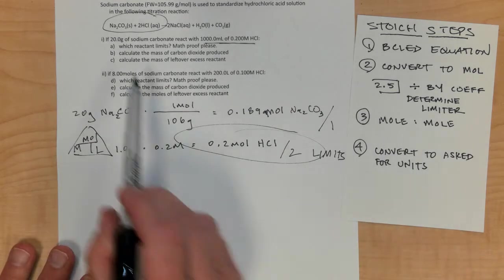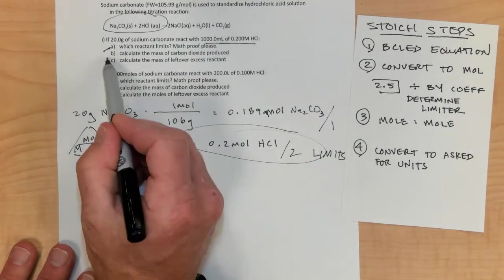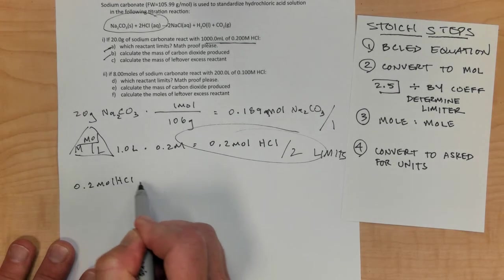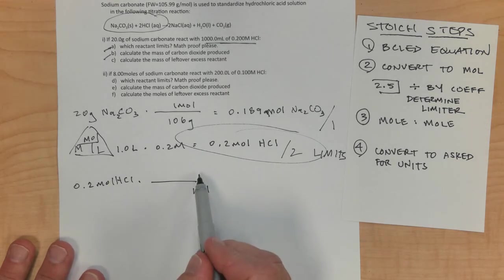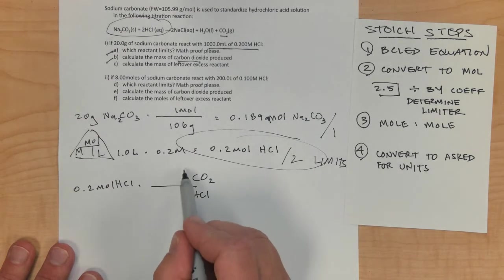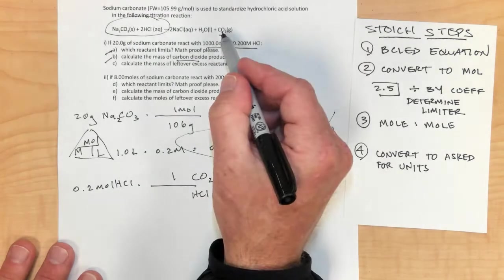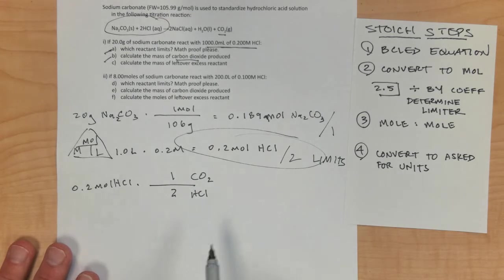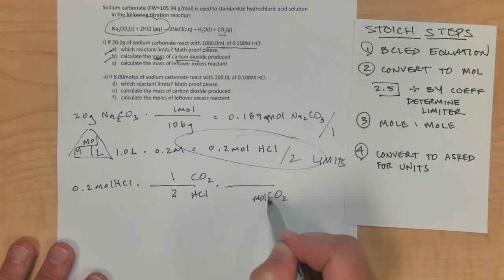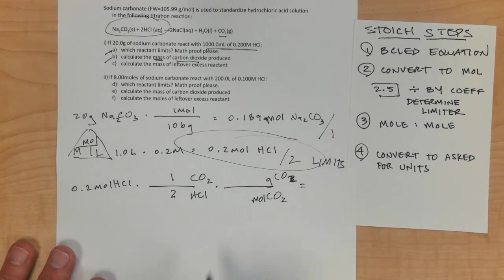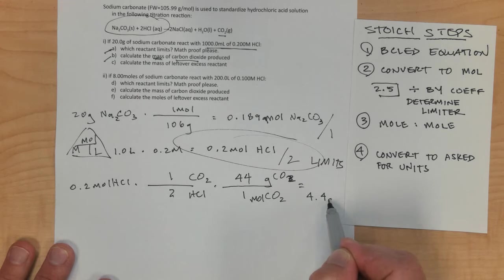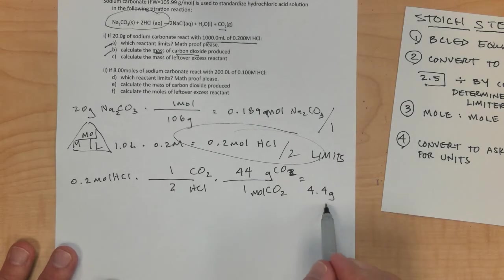Now we work the rest of the problem based on the limiter, and it asks for the mass of carbon dioxide produced. Start with 0.2 moles of HCl. Using the mole-to-mole ratio from the balanced equation: for every 1 CO2 there are 2 HCl, so multiply 0.2 moles HCl by (1 CO2 / 2 HCl). Then convert to grams: CO2 is 44 grams per mole. Multiplying those together gives 4.4 grams of carbon dioxide produced — that's letter B.